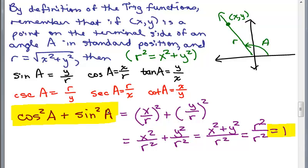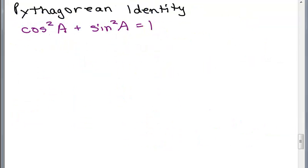This leads us to the fundamental identity in trig — the most important one to remember: cosine squared A plus sine squared A equals 1. This is also called a Pythagorean identity because it came from r squared equals x squared plus y squared, similar to A squared plus B squared equals C squared for right triangles. For any angle or real number, as long as the same angle or variable is used, cosine squared plus sine squared will always equal 1.